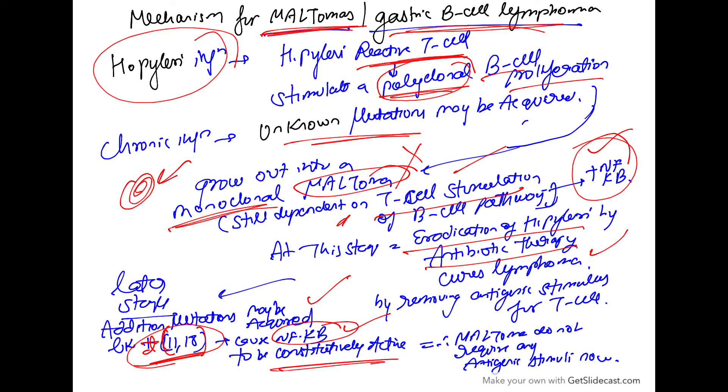Now, this NF-kappa B pathway does not require any antigenic stimulation as it was requiring before T cell activation. So, now there is no T cell activation is required. Now, no more T cell stimulation is required.